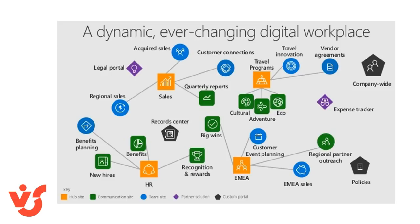Since they operate across multiple states and have organized their employees and processes by each state, WEGO will create a hub site for each state. Site collections will then be created for each major department and linked to the correct state hub site. This type of site architecture is flat, but flexible. Site collections can be moved from hub to hub as needed in the future. Within the Office 365 environment, WEGO has created a policy to only allow one layer of sub-site creation for their admins. This allows the organization to maximize tools like search and list connections without having to build complex workflows to break through site barriers.